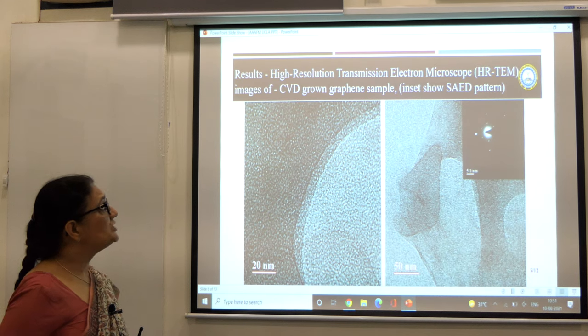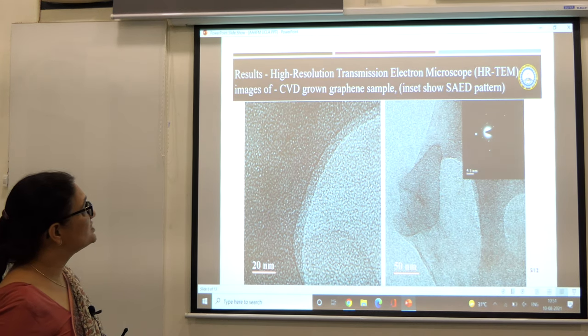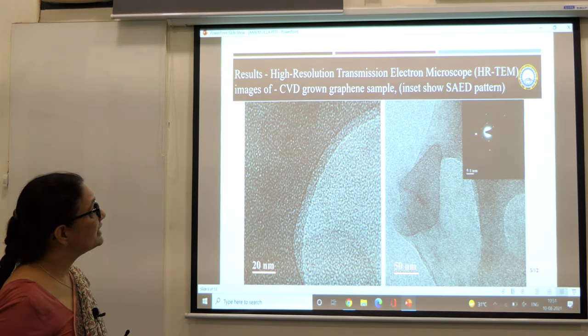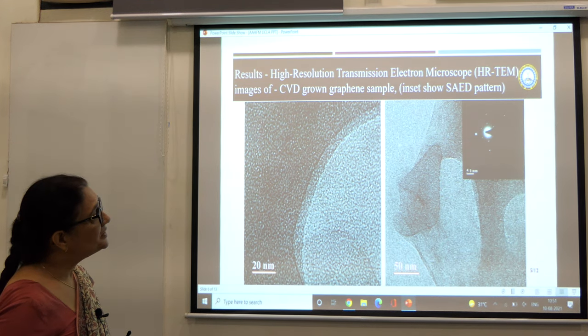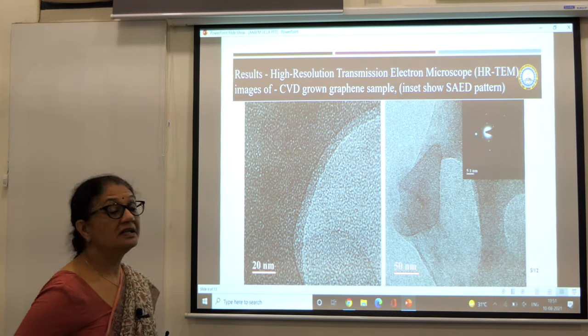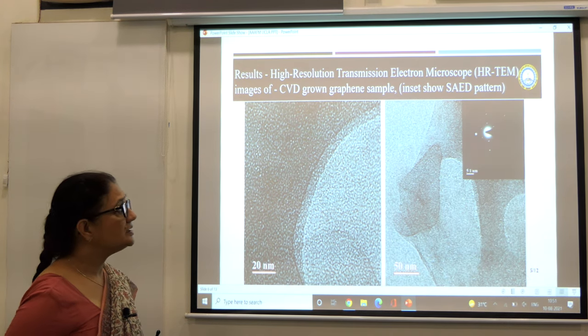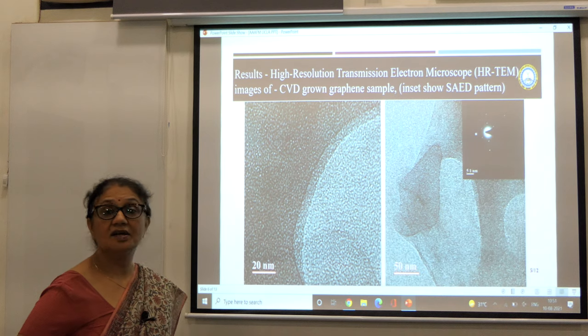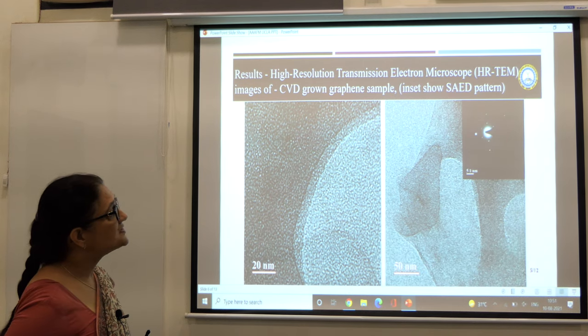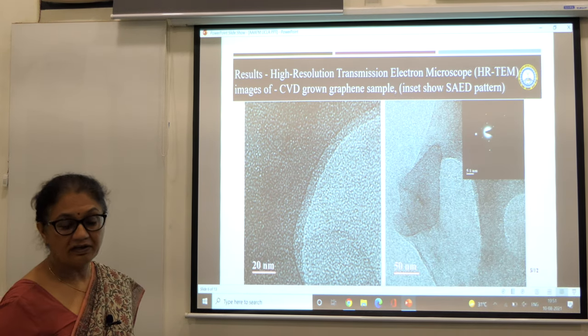These are the high resolution transmission electron microscope images of the CVD grown graphene sample. The inset gives you the SAED pattern, and the SAED pattern is giving you the hexagonal pattern which indicates the crystalline nature of the grown graphene.